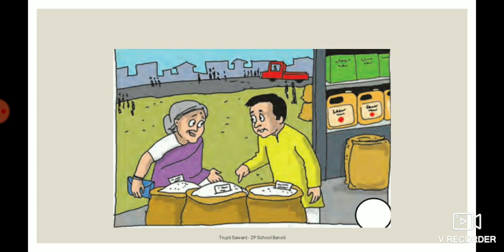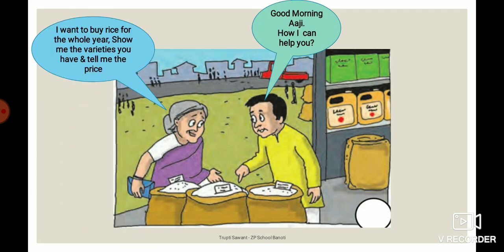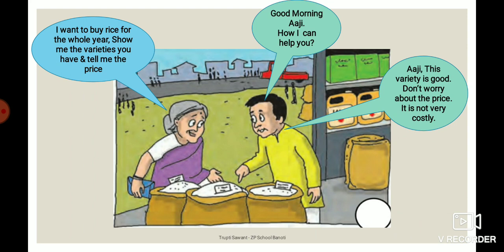Look at this picture. Here is one shopkeeper and here is one old woman — you can call her Aji. What are they talking to each other? The shopkeeper says, 'Good morning, Aji. How can I help you?' Aji says, 'I want to buy rice for the whole year. Show me the varieties you have and tell me the price.' Then the shopkeeper says, 'Aji, this variety is good. Don't worry about the price — it is not very costly.' Do you understand?